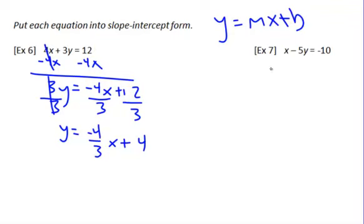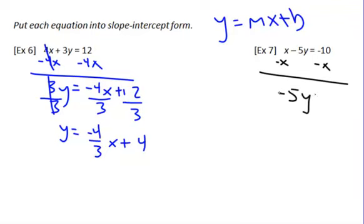Same thing for the next one — let's get y equals mx plus b. Right now there's a positive x, so let's subtract x from both sides. We're left with negative 5y equals negative x minus 10.